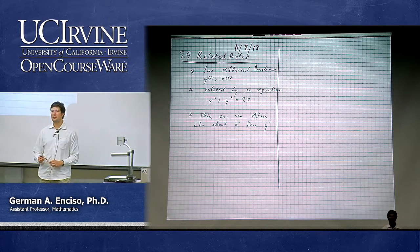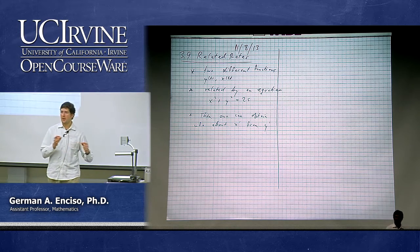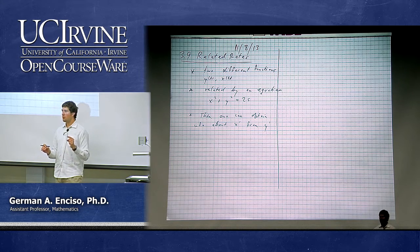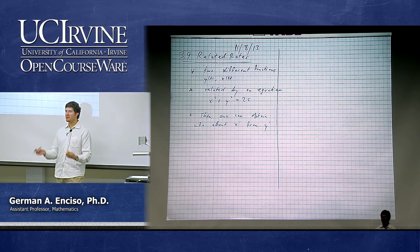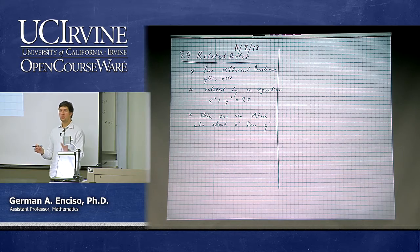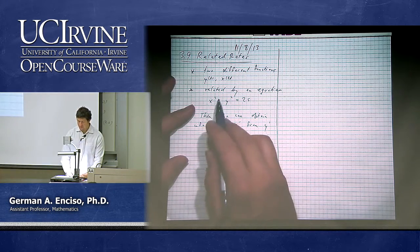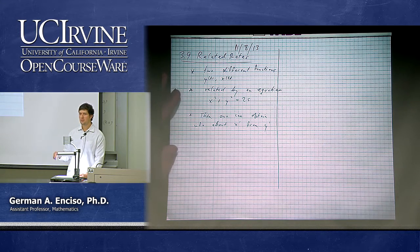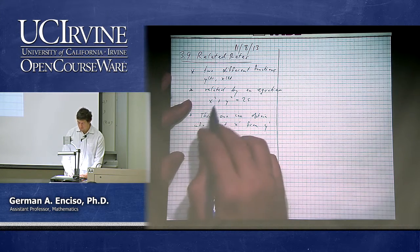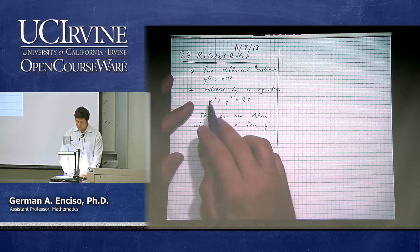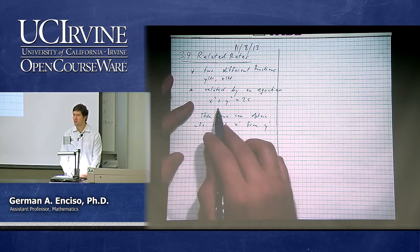Any idea as to how we could do that? If we know how fast x is changing, how do we find out how fast y is changing, or vice versa? We're going to draw upon something we learned last time: implicit differentiation. Think about x of t and y of t as functions of time, and we're going to differentiate on both sides. So if x of t is a function of time, what is the derivative of x squared? It's 2x times x prime. Think about this as some function — for example, cosine. The derivative of cosine squared is 2 times cosine times the derivative of cosine.